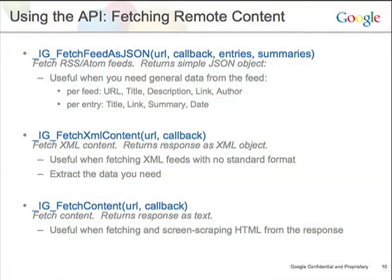The next method is fetchXMLContent, which has the capability of fetching any XML feed — it doesn't have to be Atom or RSS, it could be your own custom XML. The benefit is that a lot of times RSS feeds contain much more data than is being parsed out by fetchFeedAsJSON. So if you want to get images or access hidden tags, fetchXMLContent is very useful — it just returns back an XML object and you can iterate through all the nodes yourself and pull out all the data you need.